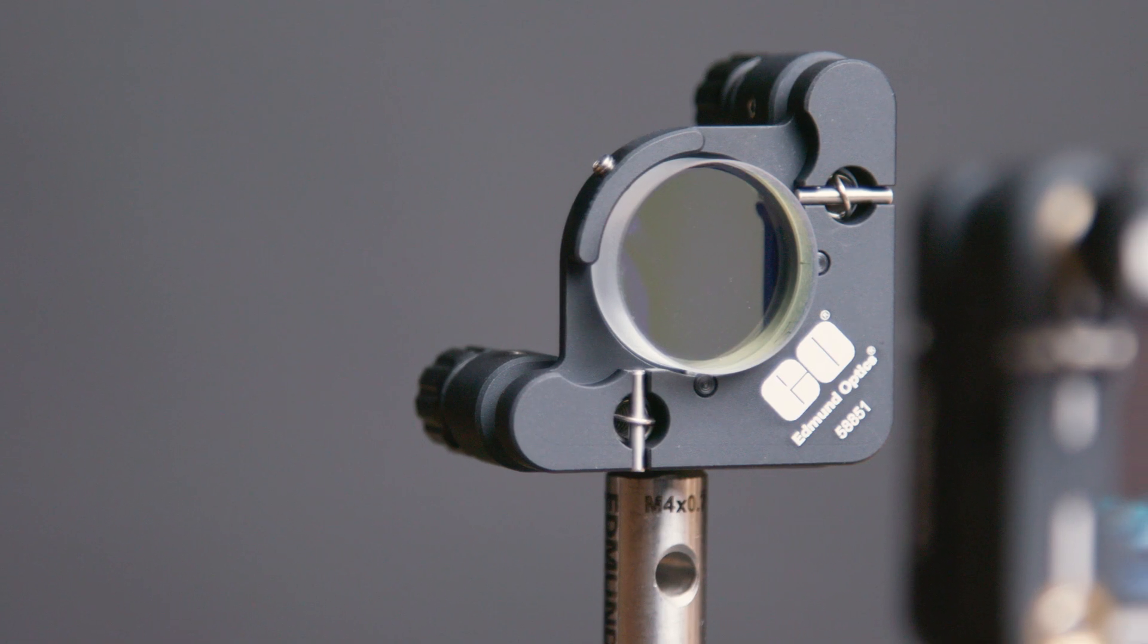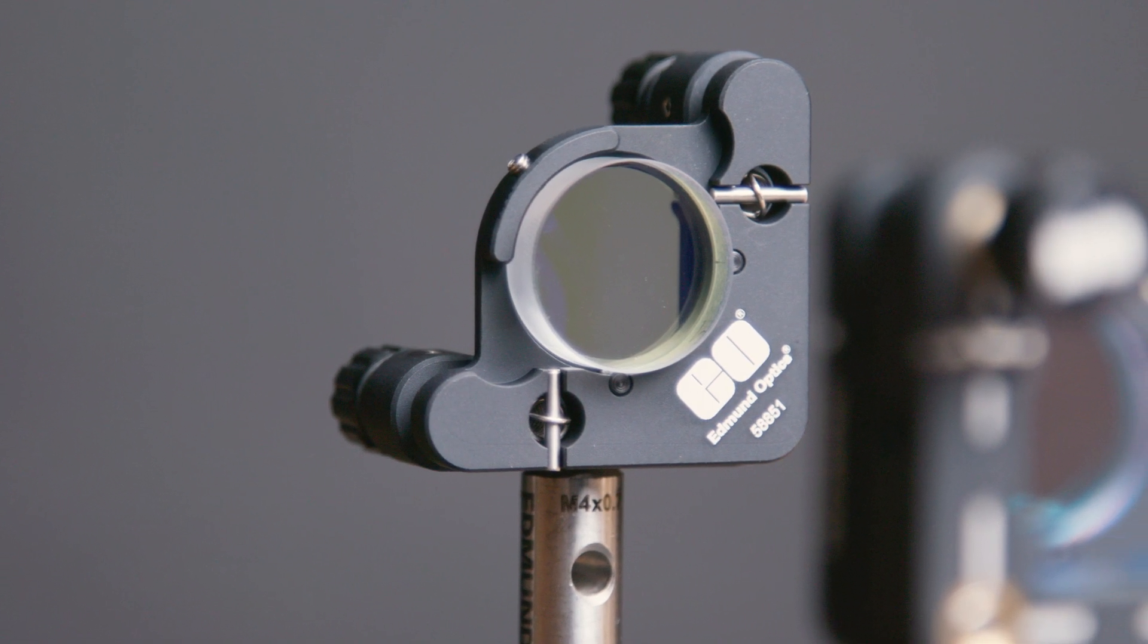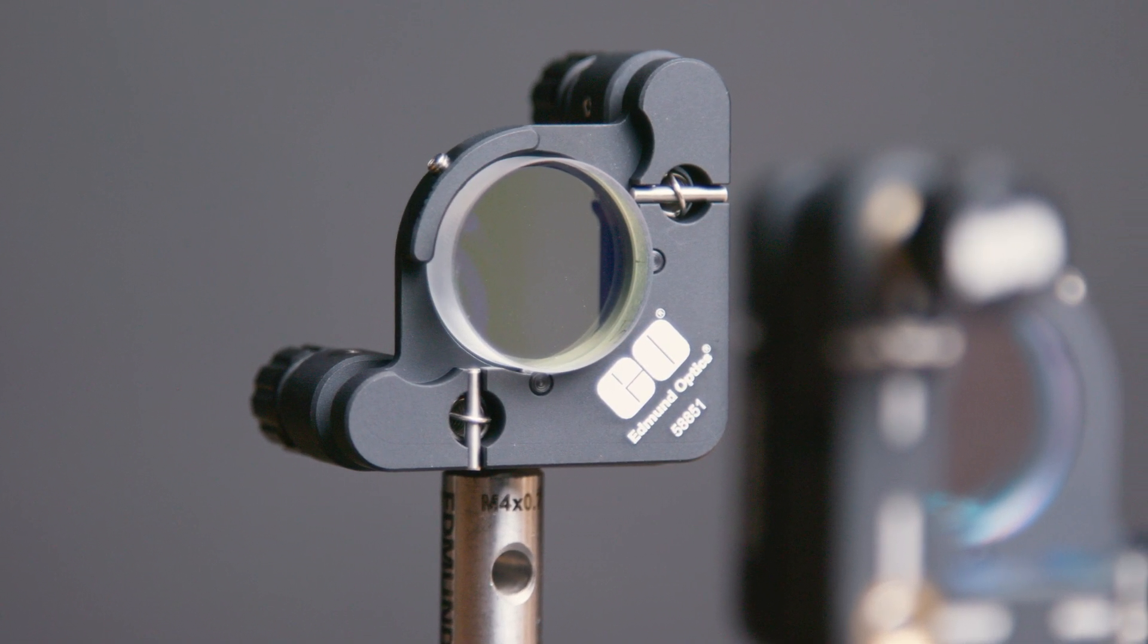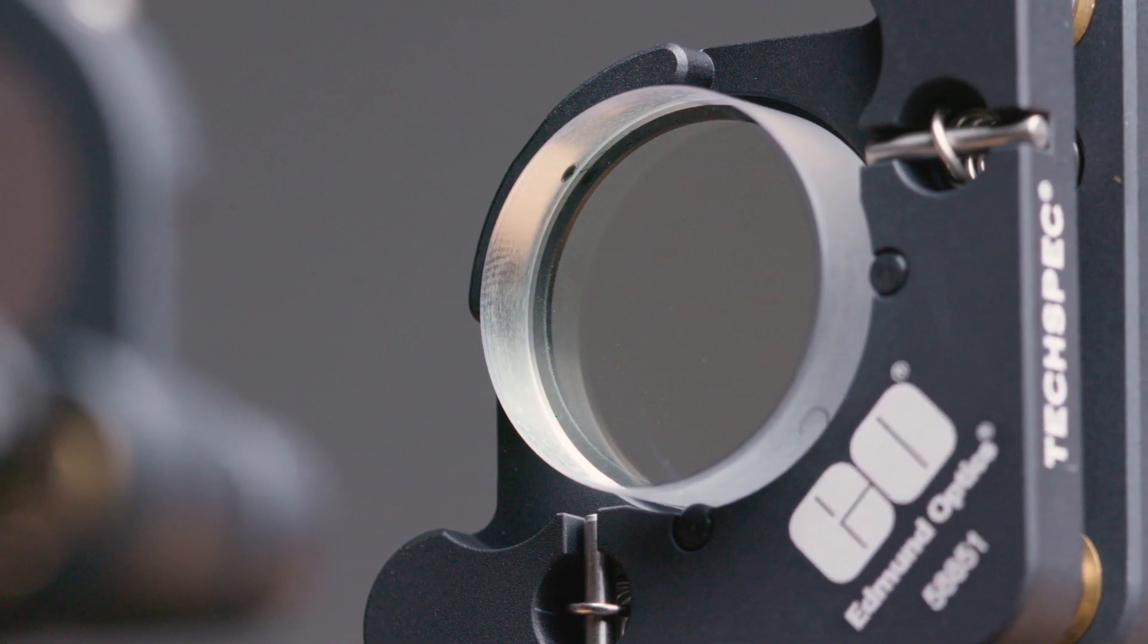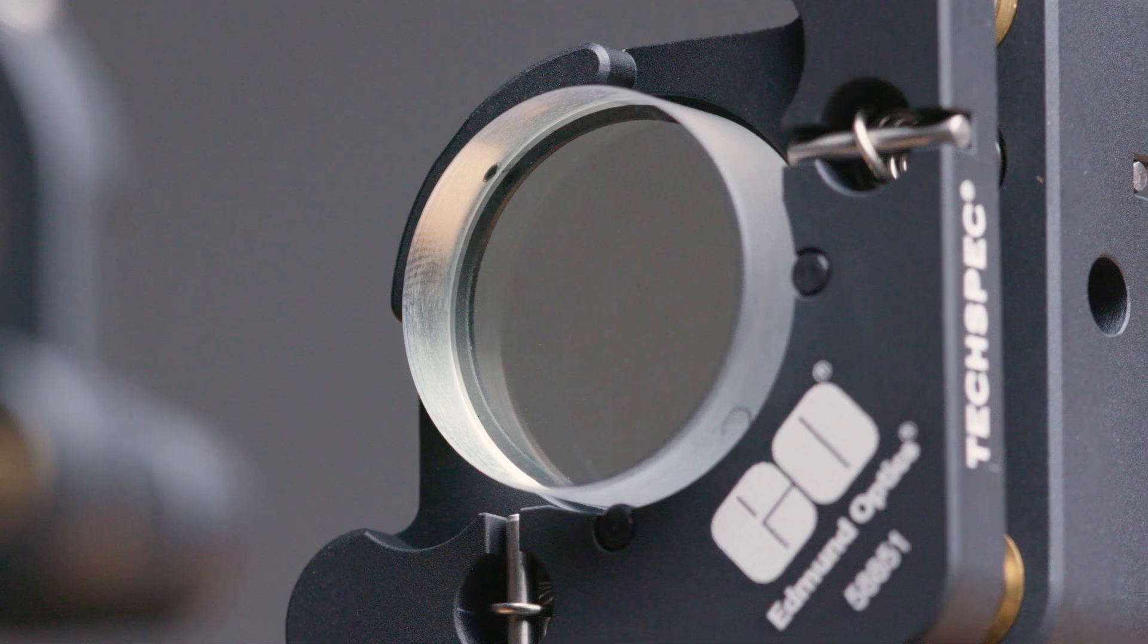Ultrafast Highly Dispersive Mirrors are a special type of mirrors designed for use with lasers that have pico, femto, or attosecond pulse durations. These types of lasers are also known as ultrafast lasers.